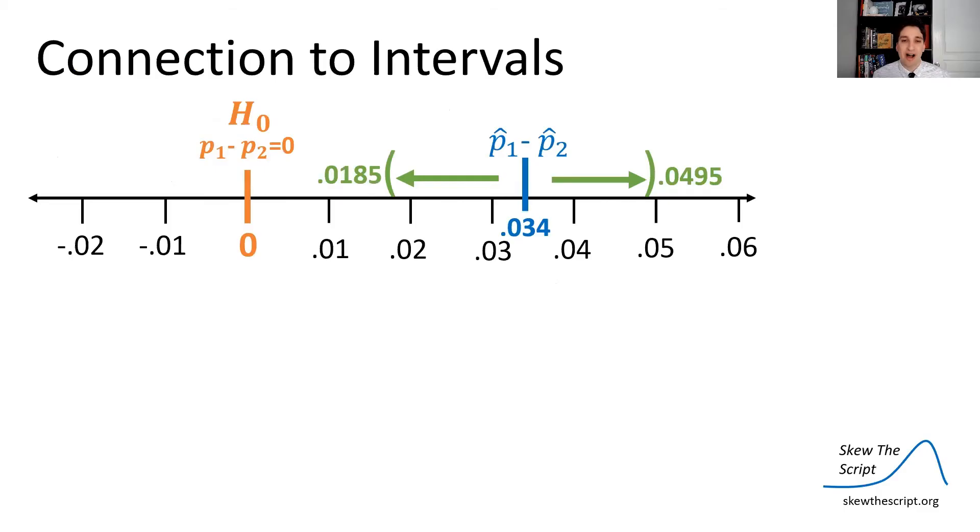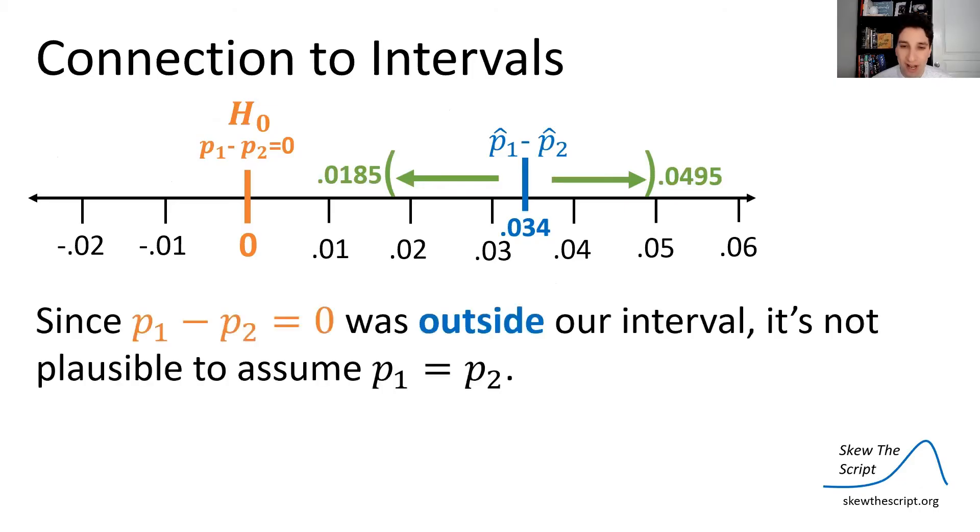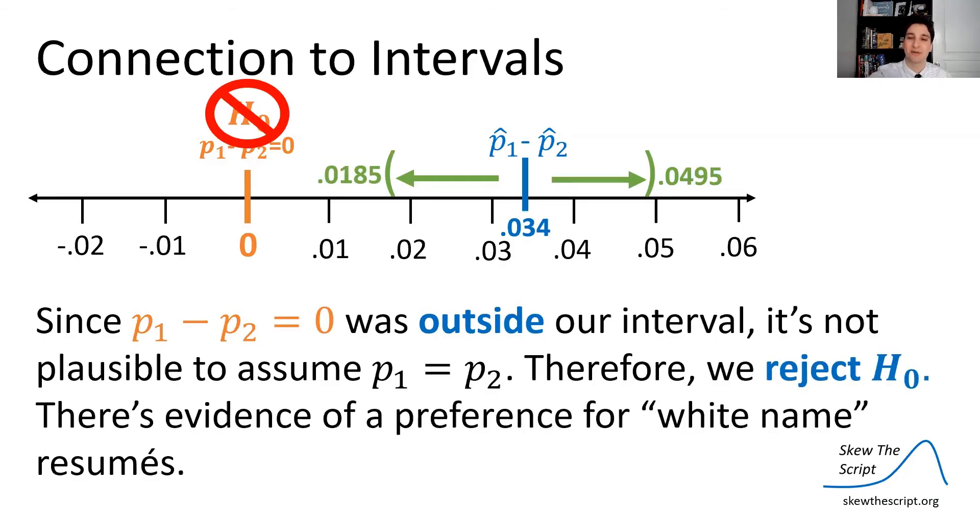So let's connect this to the idea of confidence intervals. In our last video, we made the confidence interval for the situation, which spanned this range, 0.0185 to 0.0495. Since the null hypothesis value, when you subtract and get zero, is outside the interval, it's not plausible to assume that null hypothesis value. Therefore, we reject the null hypothesis consistent with our test. There's evidence of a preference for white name resumes.